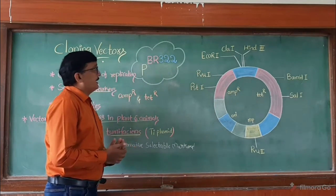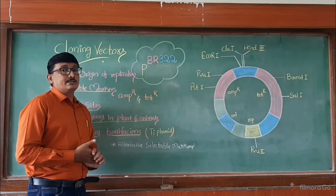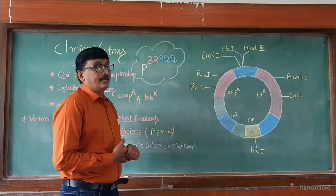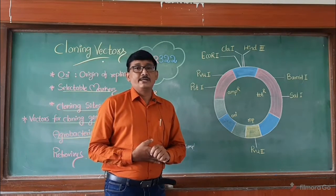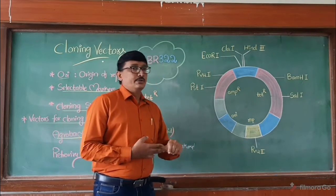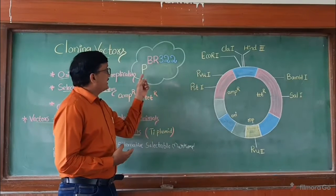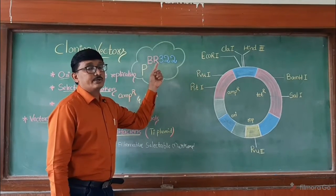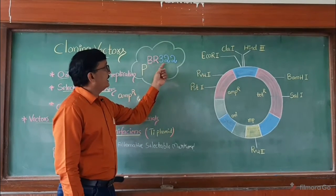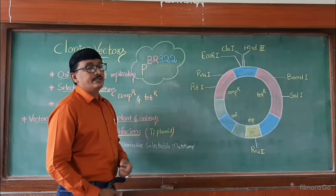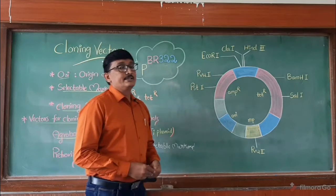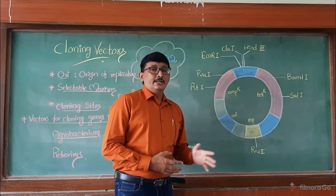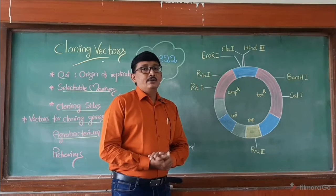PBR 322 is a plasmid which is synthesized or prepared in the laboratory by two scientists. Here, P means plasmid, B means Bolivar, R for Rodriguez, and 322 is its serial number in the laboratory.